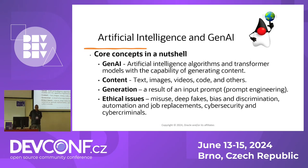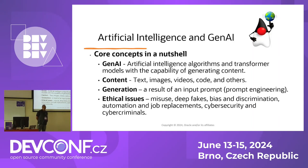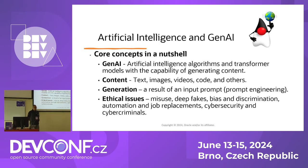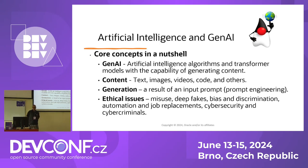In terms of content: text, images, videos, code. The generation is usually the result of an input prompt that you use to interact with the model or the GenAI provider via an API. There's a field called prompt engineering now, where some people specialize in framing questions and ways to interact with a model the right way. And we also have ethical issues related to that: misuse, deepfakes, bias and discrimination — that's why we have initiatives like responsible AI.